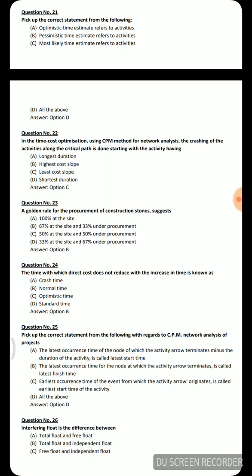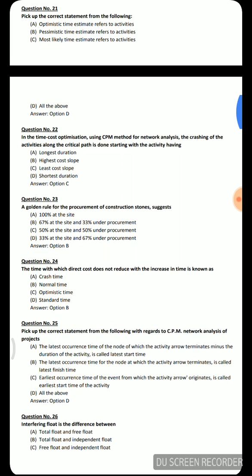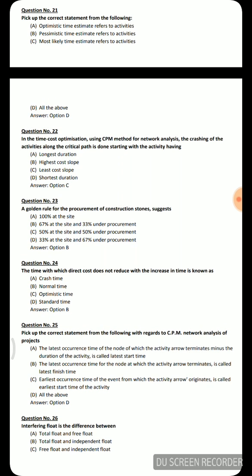First question: pick up the correct statement from the following. Option A: optimistic time estimate refers to activities. Option B: pessimistic time estimate refers to activities. Option C: most likely time estimate refers to activities. Option D: all of the above. Time estimation is for activities — events do not have time — so option D is the correct answer.